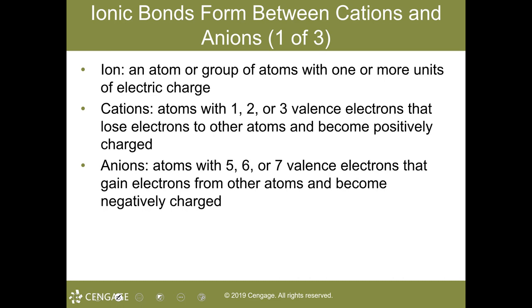Think of a cation as an atom that has lost an electron. Since electrons carry a negative charge, losing one causes the atom to become positively charged — cation, think of the 'T' for positive charge.